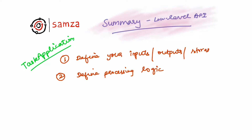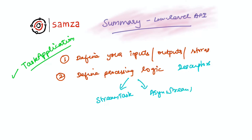To recap, we discussed how you can write an application using Samza's Task Application API. This is a simple two-step process: defining your inputs, outputs, and stores using the descriptors, and then describing your processing logic using the StreamTask interface or the AsyncStreamTask interface. In the next videos, we'll go over the high-level API and how you can use it to write your applications.